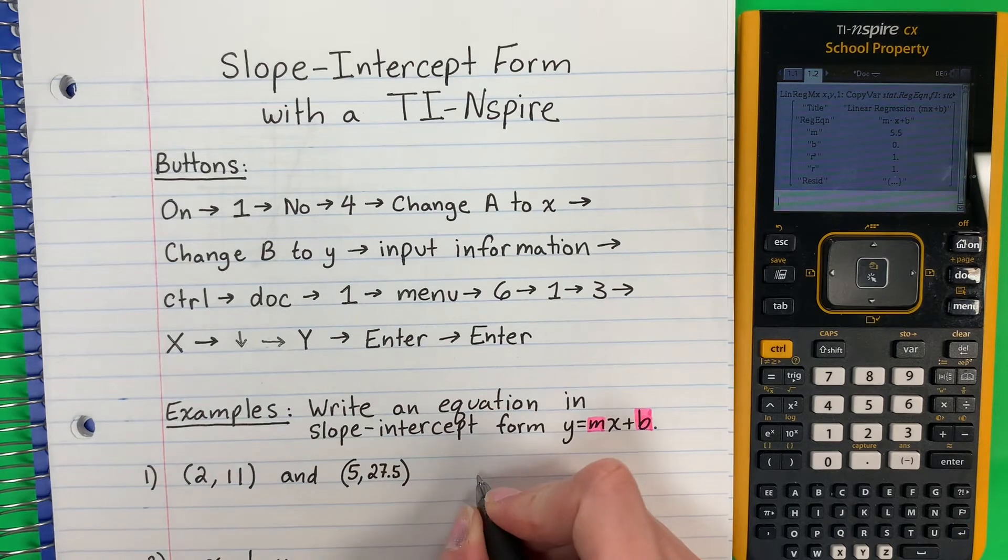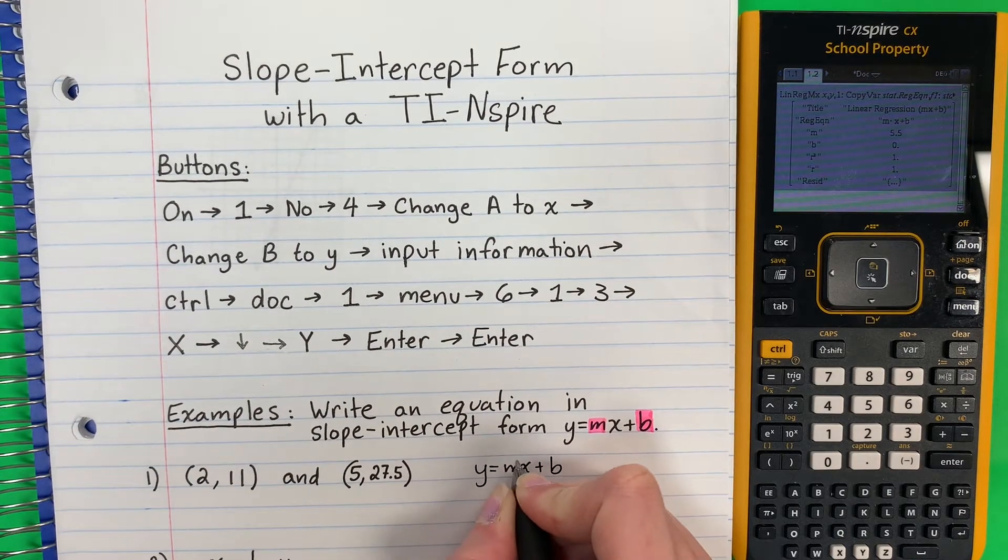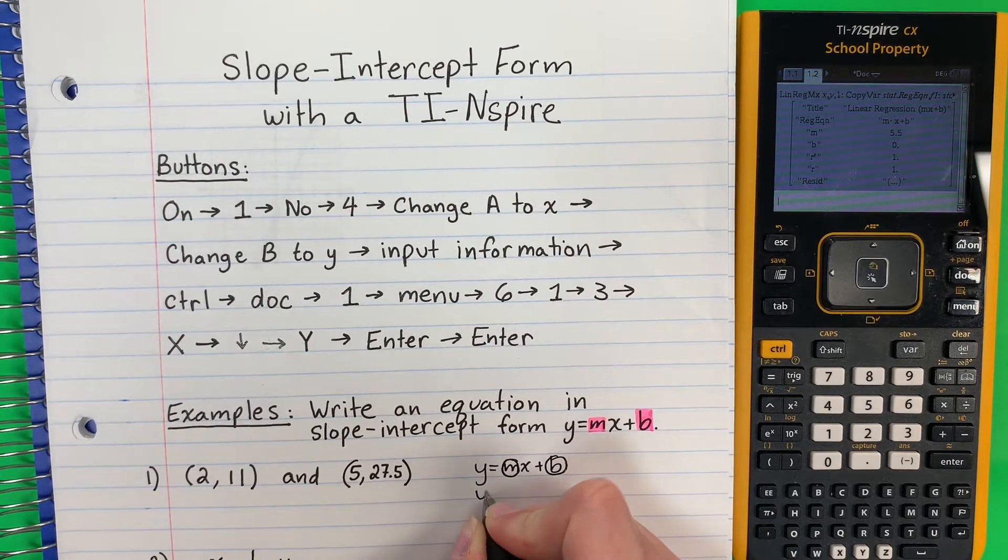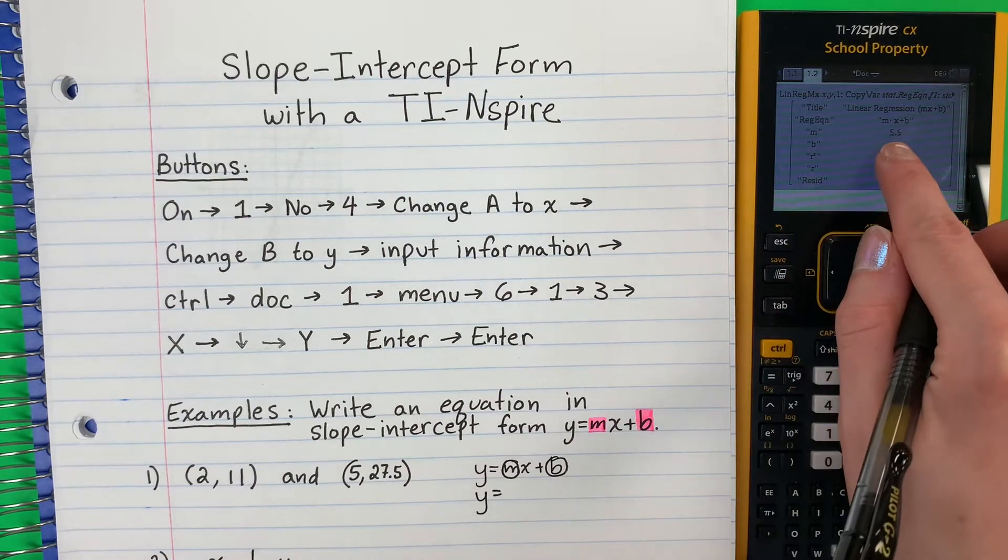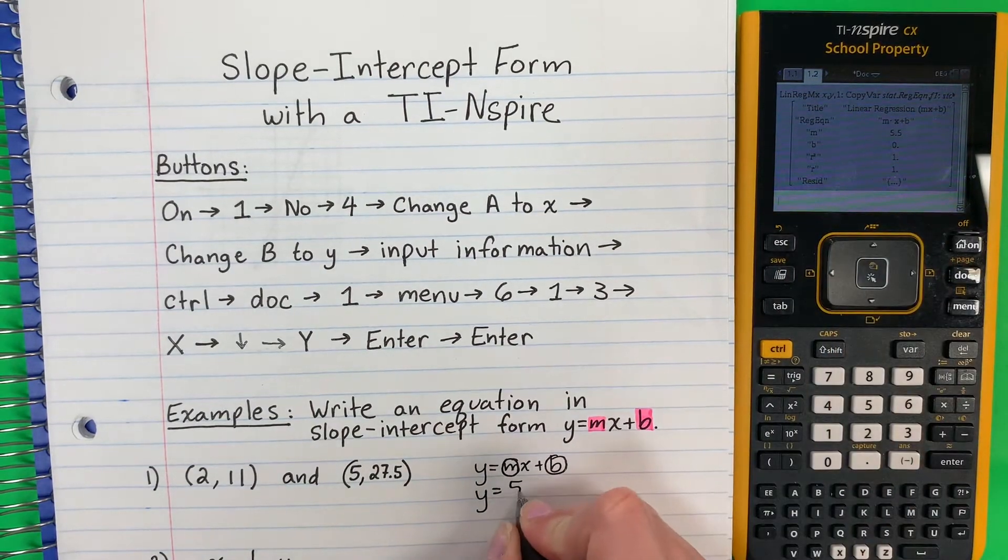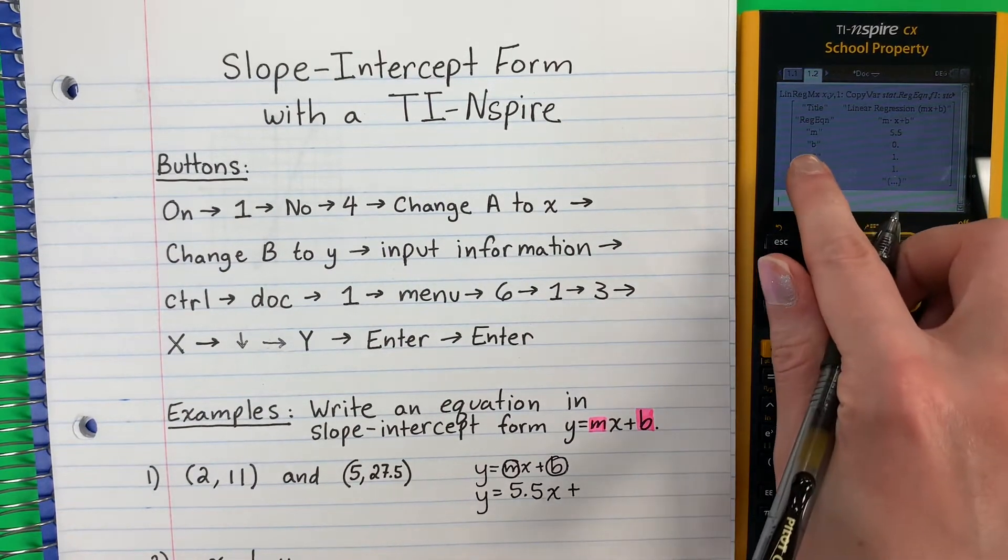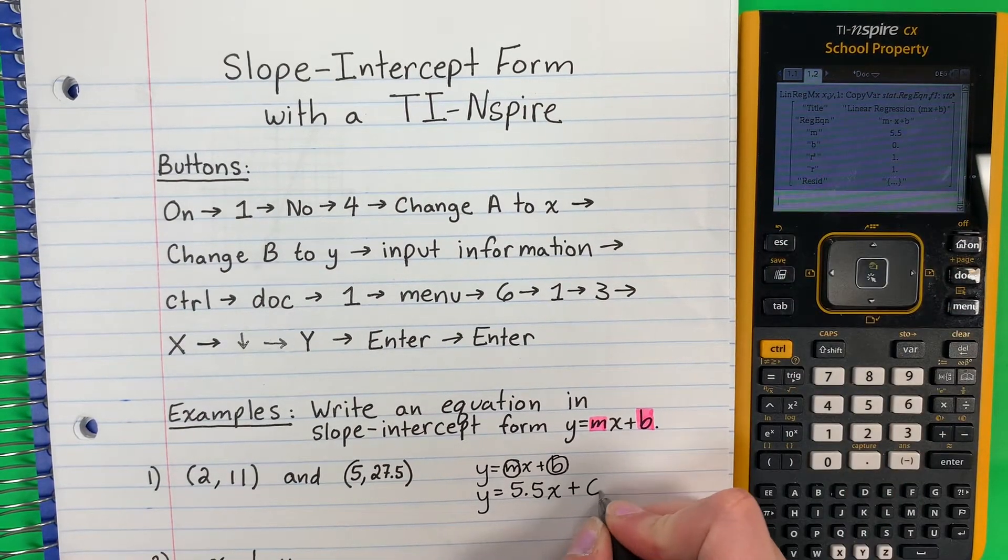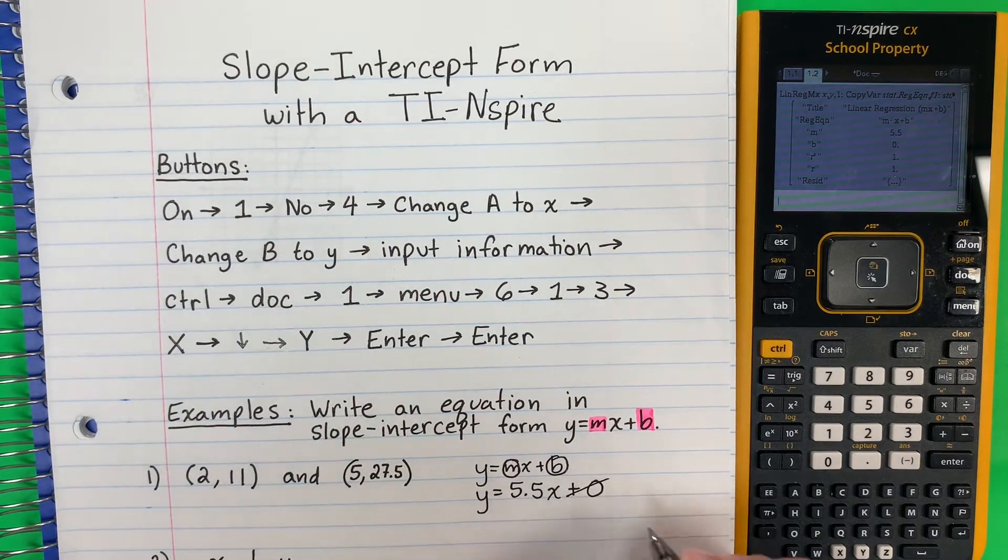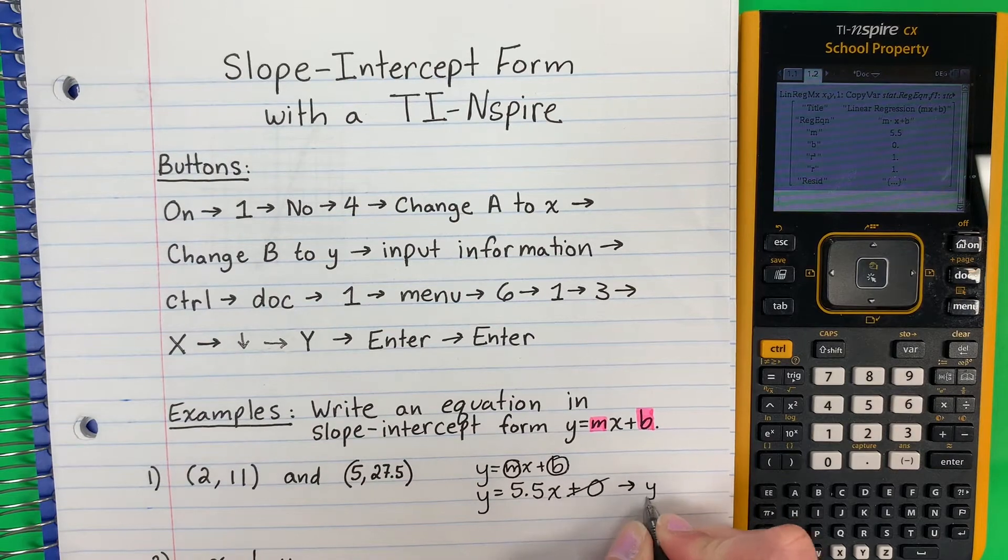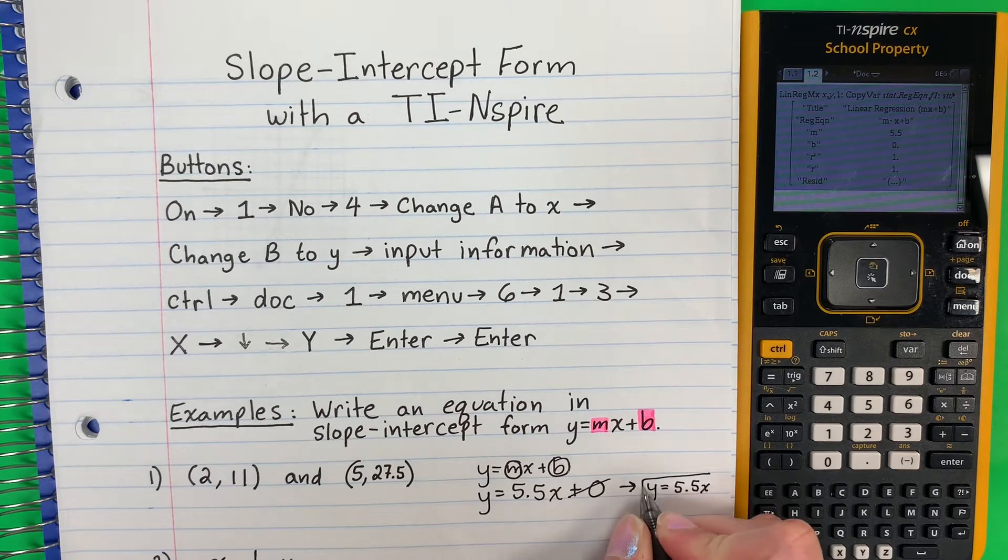So I wanted to do y equals mx plus b. And I want to change m and b. So I'm going to put y equals m. Here's m, 5.5. So I'm going to put 5.5. Put x. Copy plus. B is here. B is 0. Now, remember, plus 0 cancels out. I don't need a 0. So I'm going to write it y equals 5.5x without the 0. This is your answer.